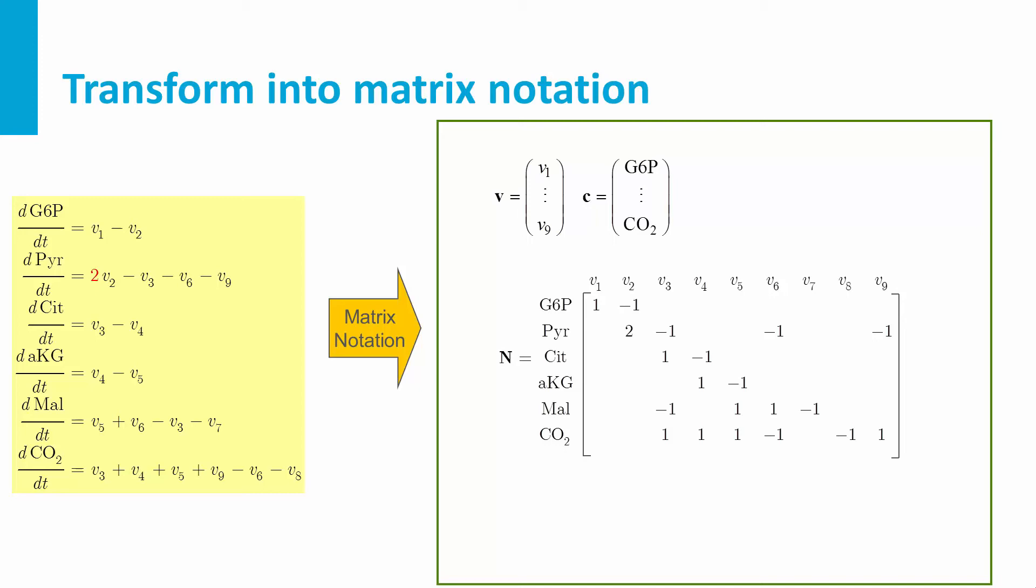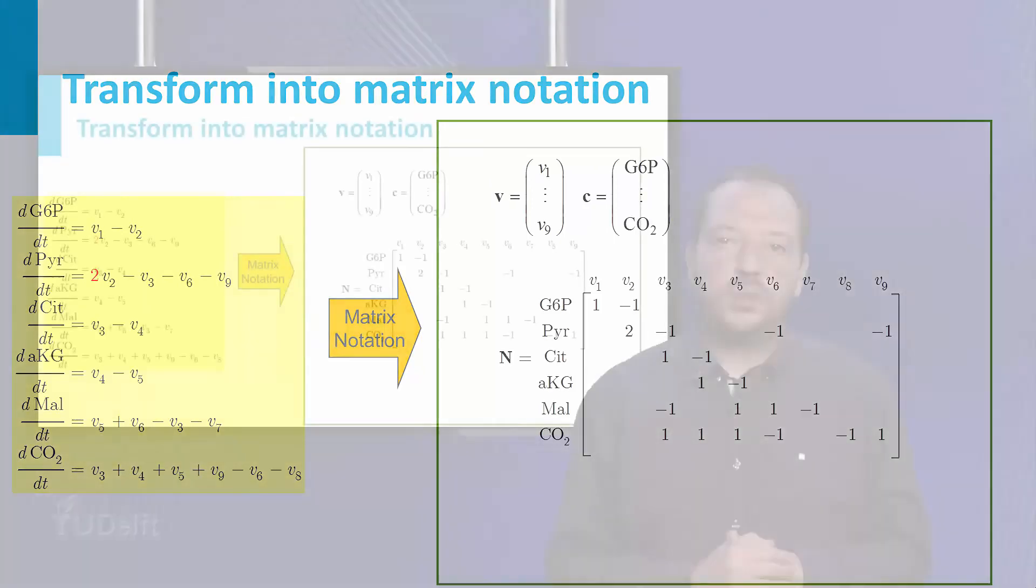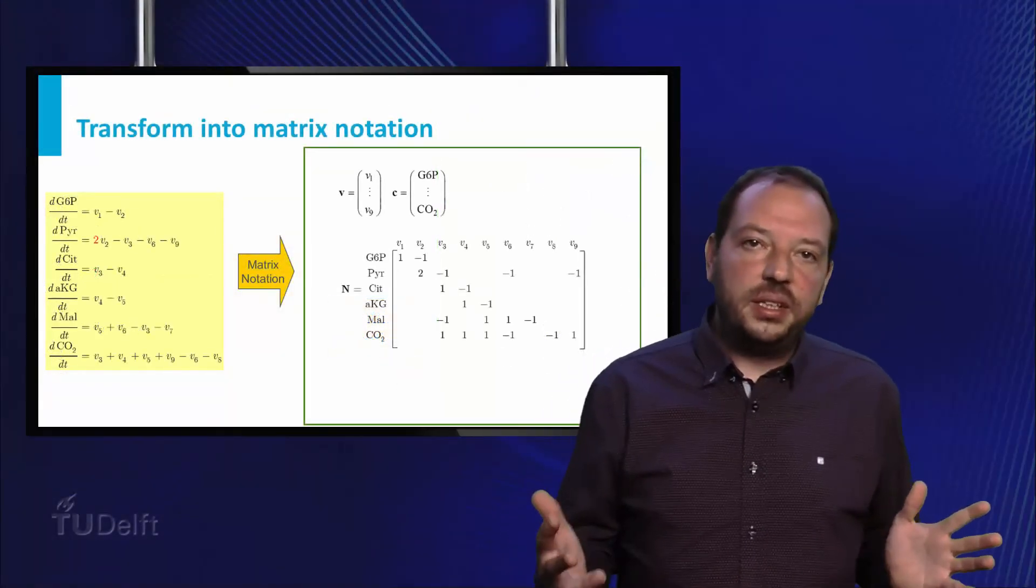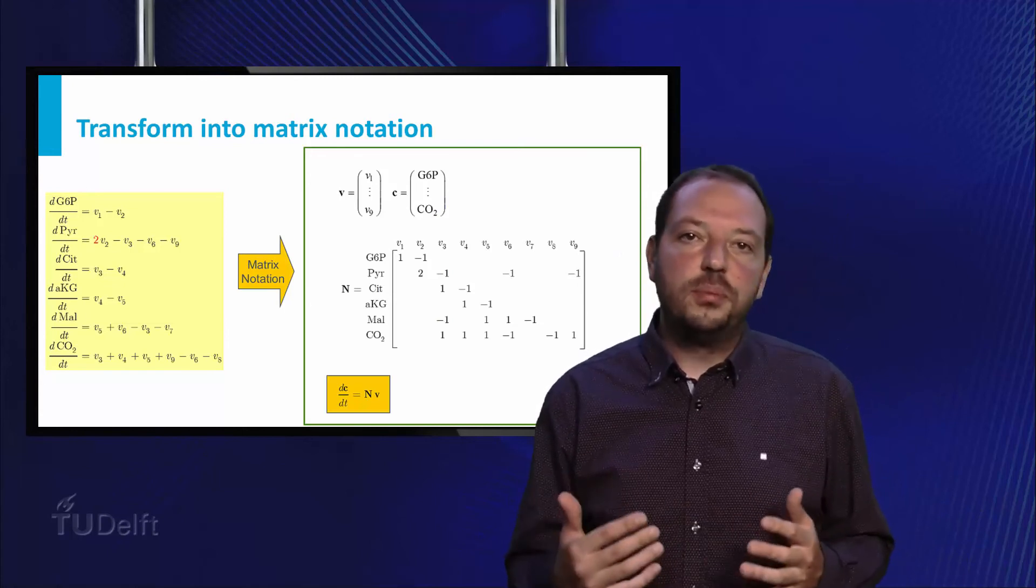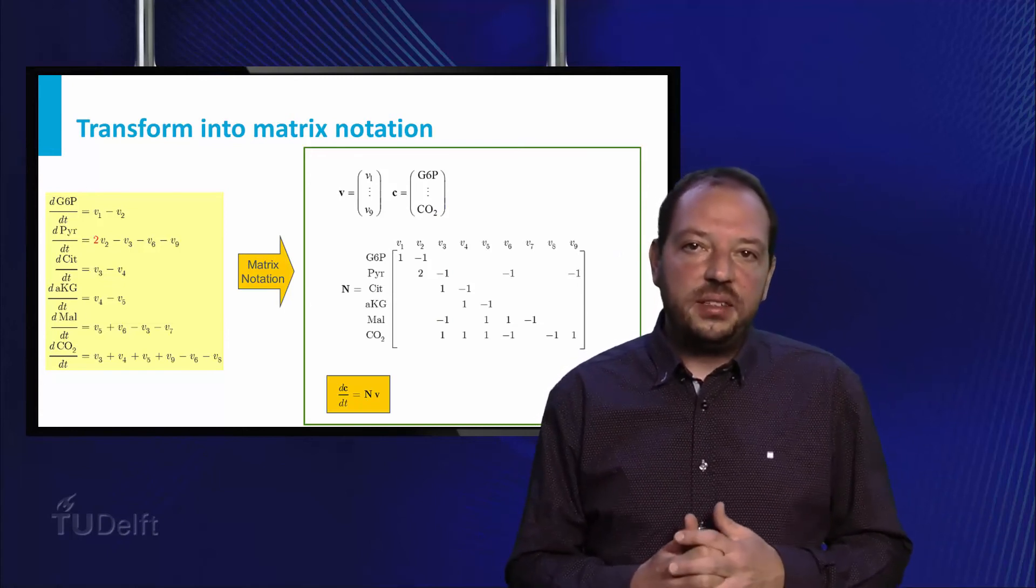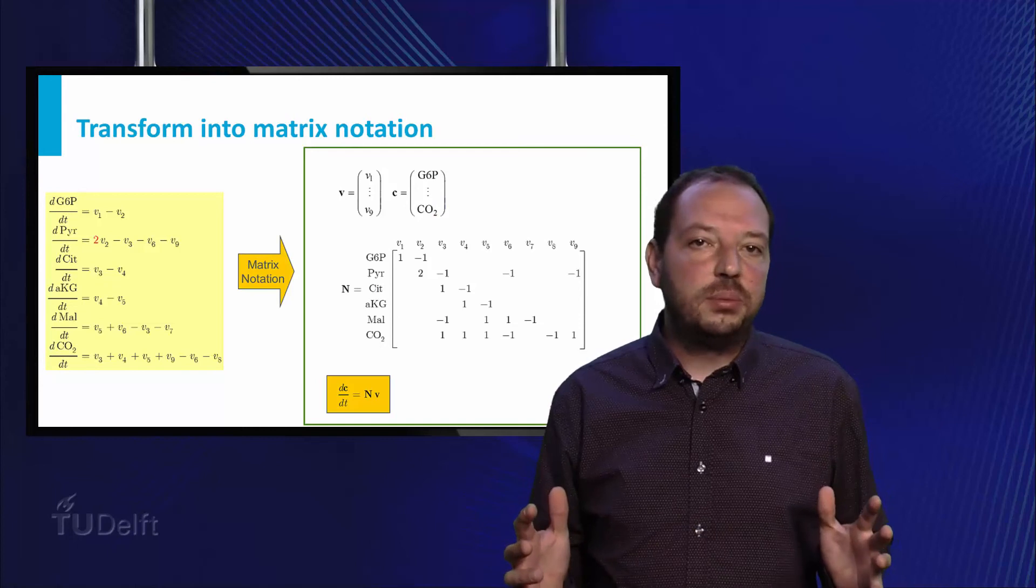In the line for glucose-6-phosphate, we will need for the inflow 1 times V1, for the outflow 1 times V2. Thus, in position 1, 1, we will place a 1 for V1, and a minus 1 in position 1, 2 for the outflow V2 consuming glucose-6-phosphate. Similarly, the remaining rows are filled.